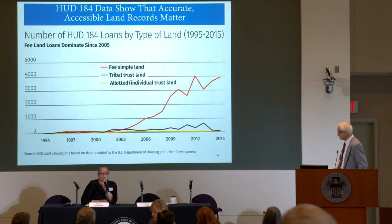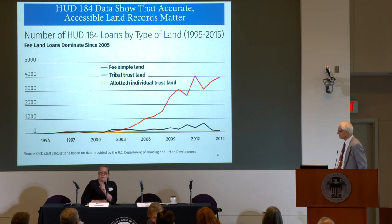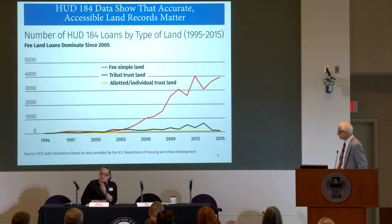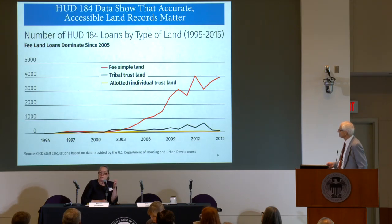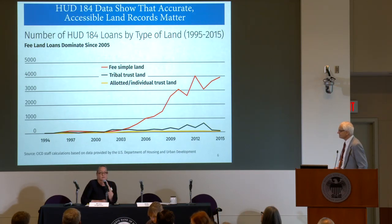What we see from that fee land line is really important: tribal members are well able — many of them — to participate in the mortgage market. They've got creditworthiness, ability to repay, and participation ability. When you hear the argument that tribal citizens don't have the capacity to participate, the fee experience shows that they do. So what this really points to is the need to open up lending on tribal trust land as well. And it is happening in some places — it's not impossible, it's being done.